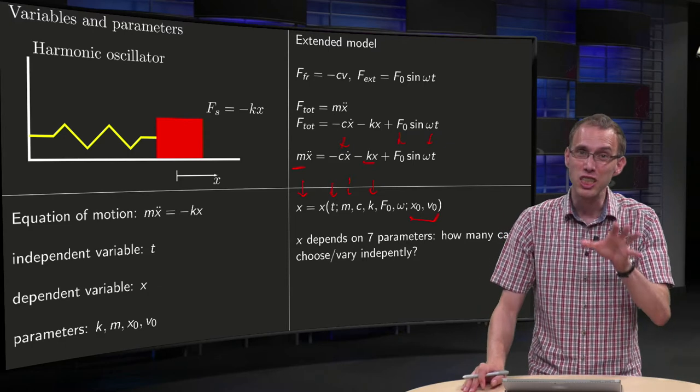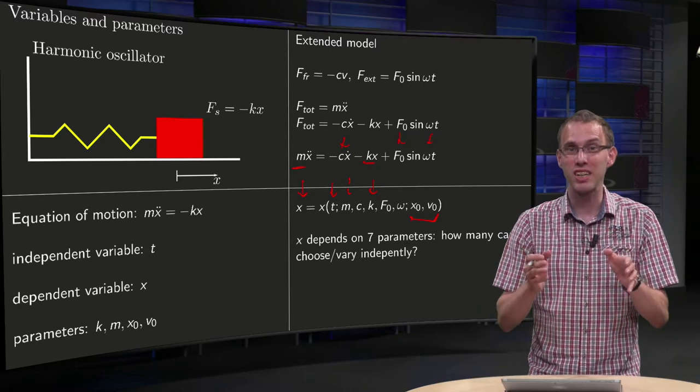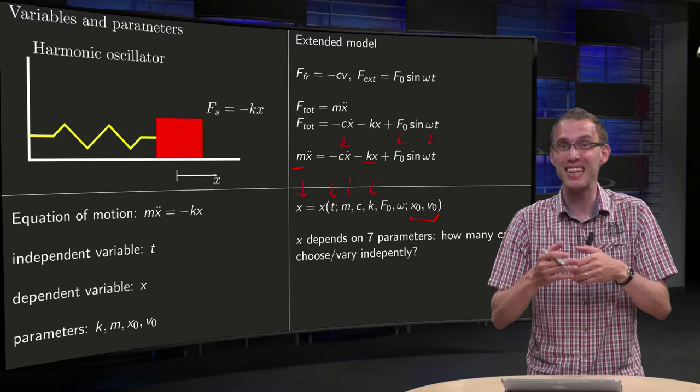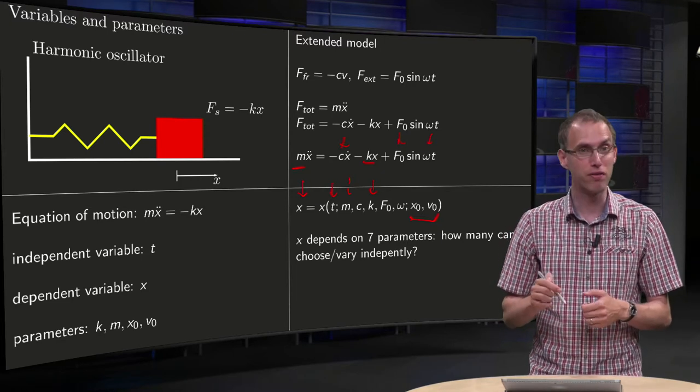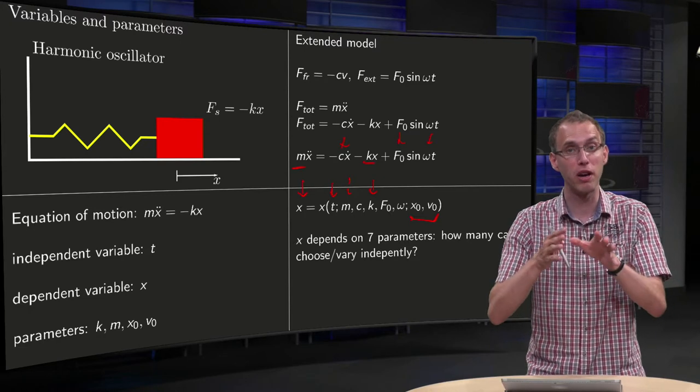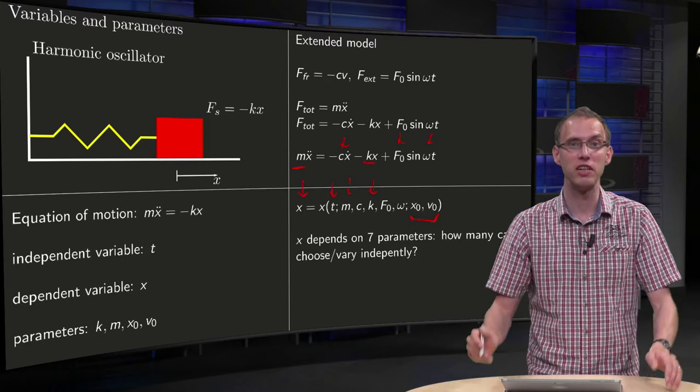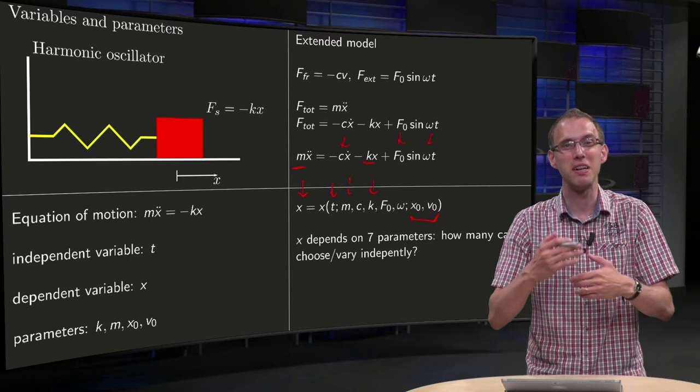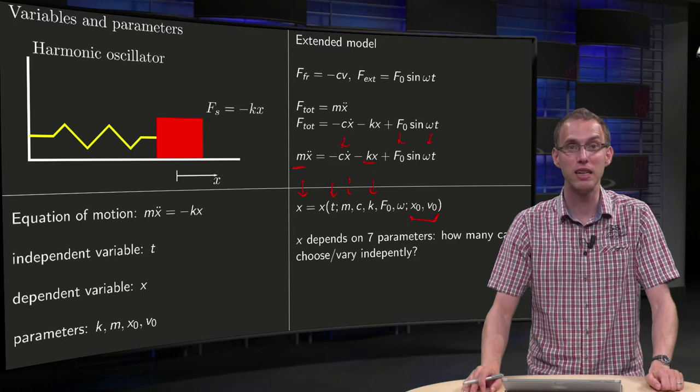But now, next question is coming. How many parameters can you actually choose and vary independently? For example, if you would multiply m, c, k, and f0, if you would multiply them all by 2, the model remains the same, so it doesn't make sense to vary those independently.